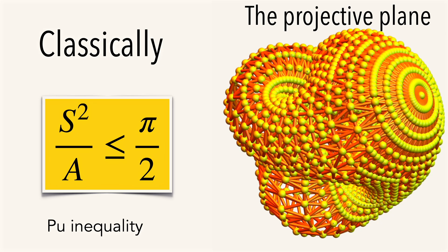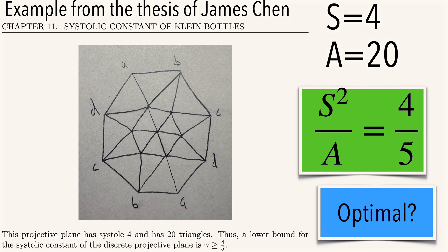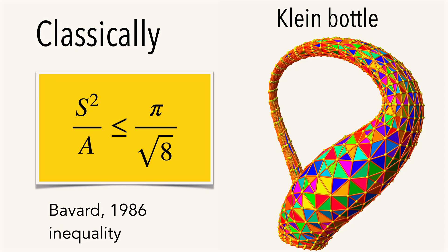Classically, a student of Loewner-Pu has shown that the systolic ratio is pi over two for the projective plane. In the discrete, James found an example with four-fifths.